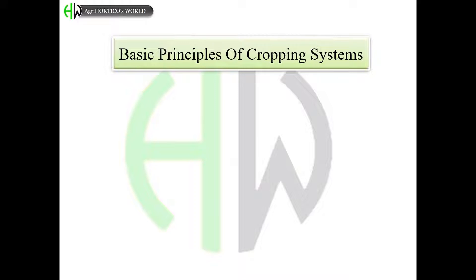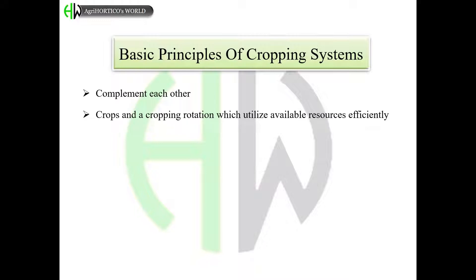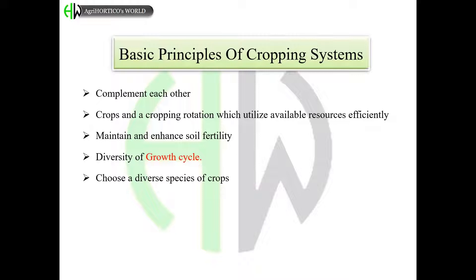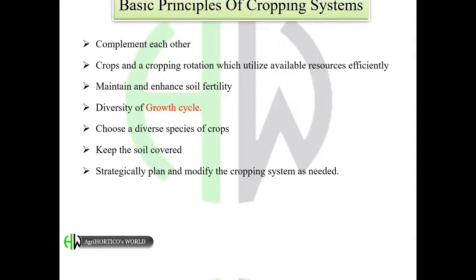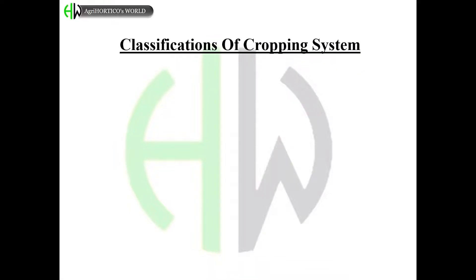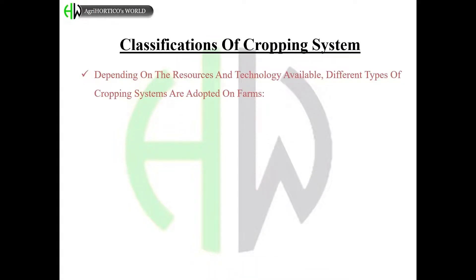The basic principles of cropping systems are: systems should be complementary to each other; crops in a cropping rotation should utilize available resources efficiently and maintain and enhance soil fertility; understand the diversity of growth cycles and choose diverse species of crops; keep the soil covered; and strategically plan and modify the cropping system as needed.